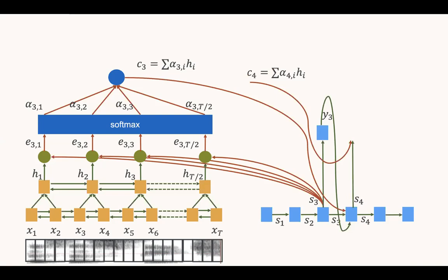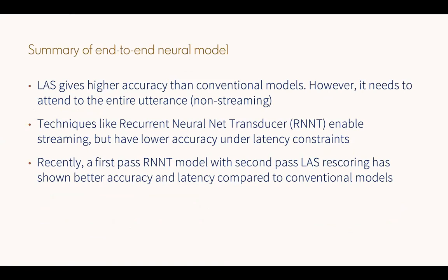In essence, the decoder uses attention to decide what to attend to on the encoder side to output a specific decoder hidden representation, which is then used to output the final letter. Encoder-decoder models with attention for speech recognition — these LAS models — output letter sequences with blanks. Because they are trained on actual word sequences, these letter sequences tend to always produce real words. Furthermore, because they output letter sequences, they can output words never seen during training — there is no out-of-vocabulary problem with these end-to-end neural models.